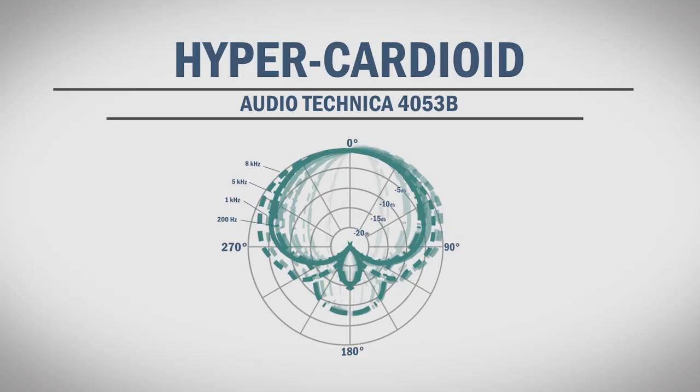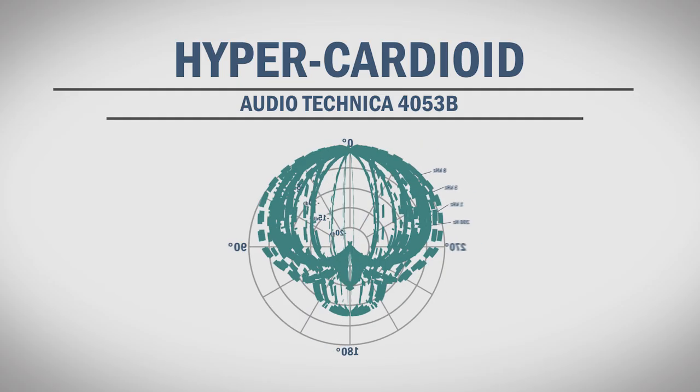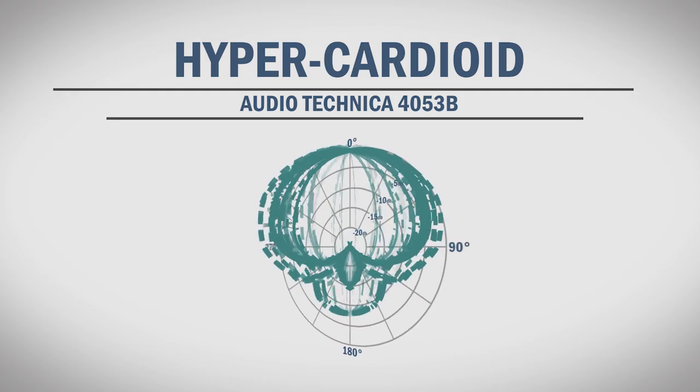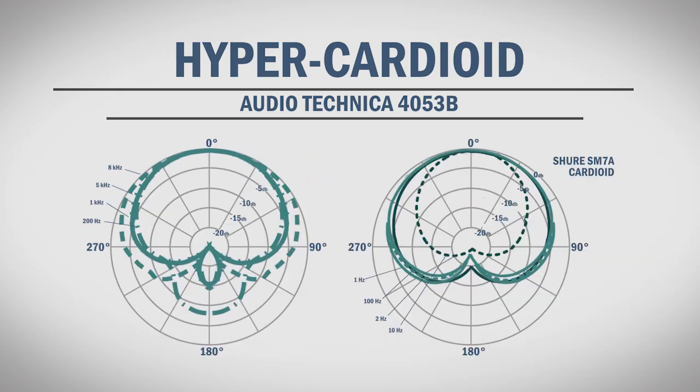A hypercardioid pickup pattern is a more directional version of the cardioid. The main difference is that it rejects more audio from the side, but also picks up a little more directly in the rear. These mics are sometimes referred to as mini shotguns. This is the polar pattern for the Audio-Technica 4053B. If we compare its polar pattern to the SM7A, you can see that the sensitivity from the backside is reduced, while the area directly behind the mic is more sensitive.